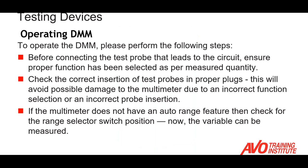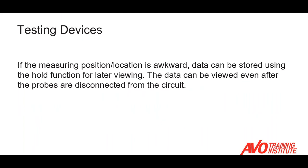To operate the meter, before connecting it to the circuit we need to make sure the probes are connected in the proper jack for the function selected. We need to make sure we don't mix multimeter leads between manufacturers, ensure we get a good connection, and if the meter doesn't have an auto-range function, make sure we have the selector switch in the right range.